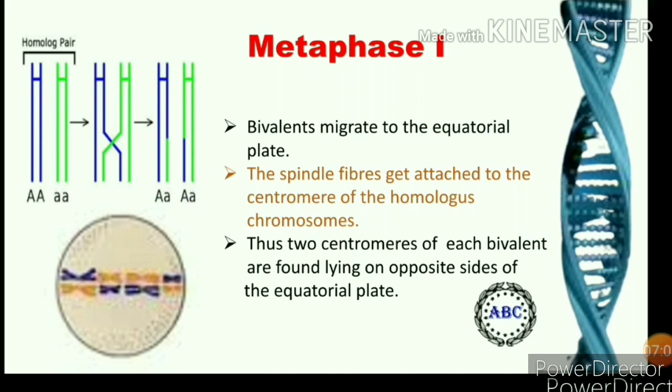The second important phase is metaphase I, which is the very shortest phase. All bivalents migrate to the equatorial plate — this is an important characteristic of metaphase first. The spindle fibers get attached to the centromeres of each of the two homologous chromosomes in a bivalent. Thus, the two centromeres of each bivalent are now found lying on opposite sides of the equatorial plate.